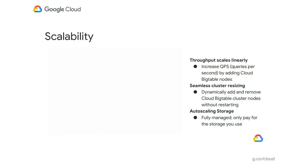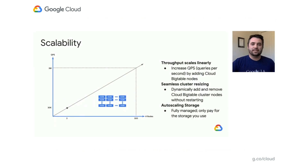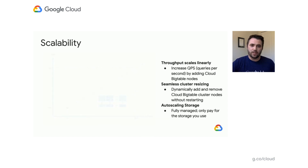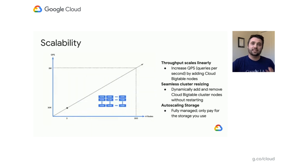One of the really nice things about Cloud Bigtable is it gives you consistent performance as your workload grows. It can be easily scaled by simply adding nodes or even removing nodes within the UI or command line interface. It offers seamless cluster scaling, so dynamically adding and removing these nodes can be done without restarts. And the storage system automatically scales as well, so you only pay for the storage that you're actively using.